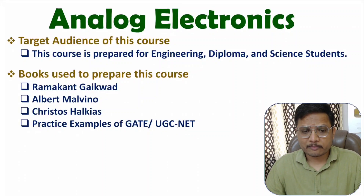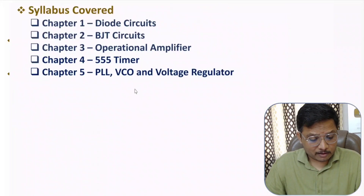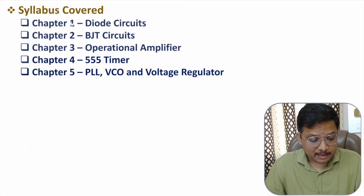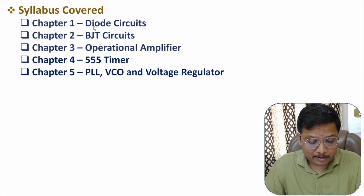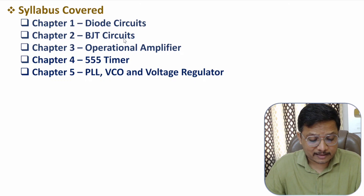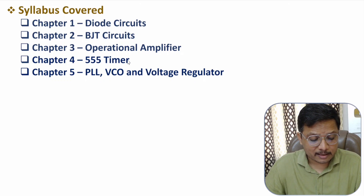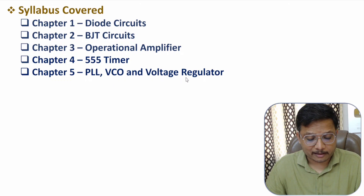In total, five chapters are there in this course. The first chapter is based on diode circuits, the second on BJT circuits, the third on operational amplifier, the fourth on 555 timer IC, and the fifth chapter is based on PLL, voltage control oscillator, and voltage regulator.